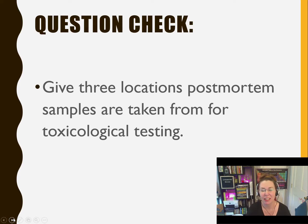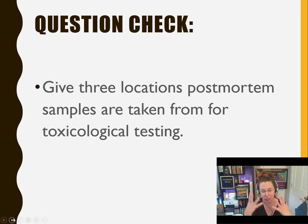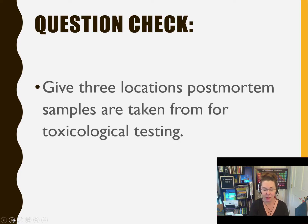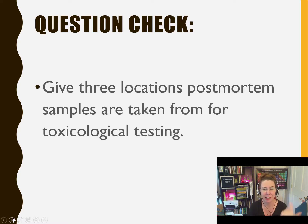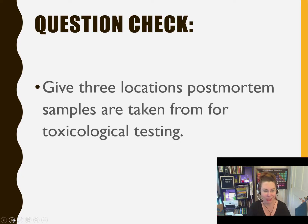Question check: Give three locations that post-mortem samples are taken from for toxicological testing. You might have said the liver, the vitreous humor, blood from the heart or a peripheral site, urine directly from the bladder, gastric contents from the stomach and the intestines, or hair. Those are all possibilities for places where post-mortem samples can be taken for toxicological testing.